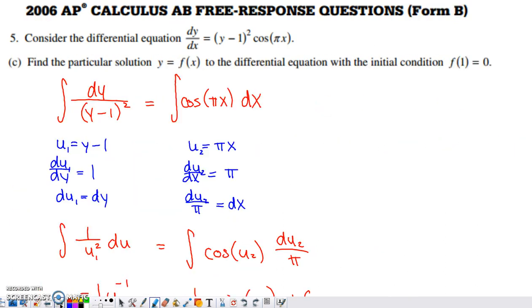The main part of this that we want to discuss is part C. Part C is definitely quite a bit lengthier than parts A or B. They ask us to find the particular solution y equals f(x) to the differential equation with the initial condition f(1) equals 0. When we solve a differential equation in Calc AB, we're going to rely on the method of separation of variables. To separate the variables, I multiplied the right side of the equation by dx. I simultaneously divided the dy that was on the left side of the equation by this quantity, and I had my variables successfully separated.